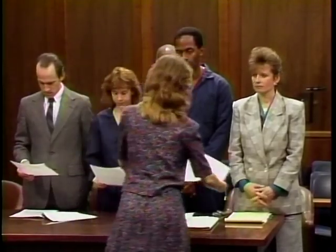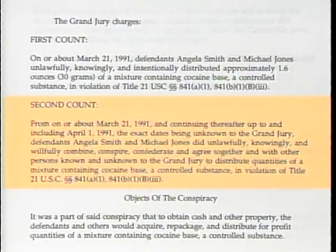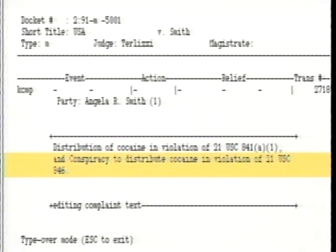If an indictment is not returned against the defendant within P-1's 30-day limit, the case may be dismissed, and if the defendant is in custody, the defendant may be released. Let's say our co-defendants make their initial appearance in court the day after their arrest and an indictment is filed against them within the 30-day period. The indictment charges both defendants with two counts: Count 1, distribution of cocaine base, and Count 2, conspiracy to distribute cocaine base. It's important to keep track of individual counts because ICMS Criminal tracks time limits on a per-count basis for each defendant.